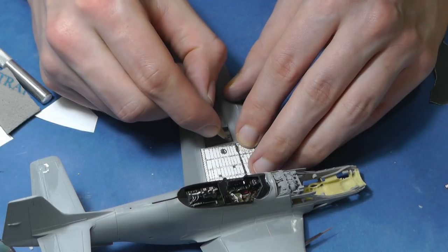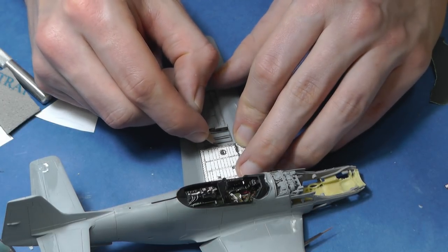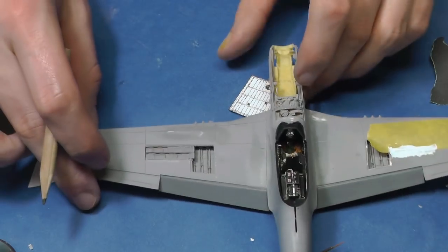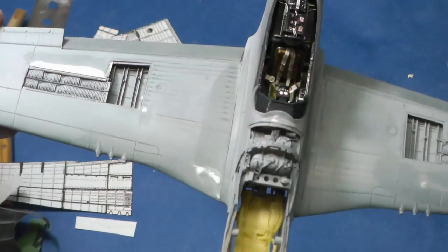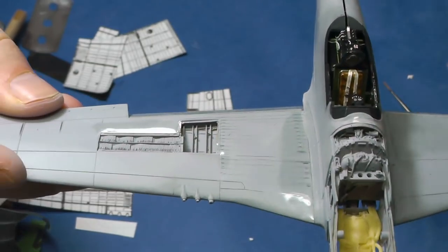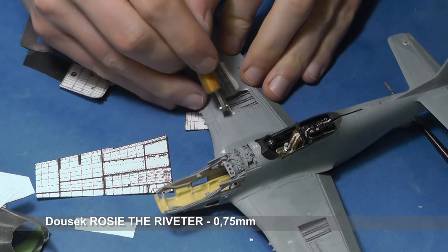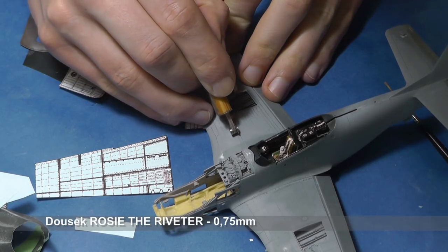First I mark rivet lines with a pencil. It really helps me to make straight lines. I use Doughshaker rivet tool with a 0.75mm pitch. It is perfect for the scale.